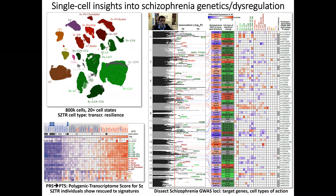We can now use these single-cell data to go back to the genome-wide association loci and figure out what are the target genes that are differentially expressed in disease in these regions, and what are the cell types where these are expressed. Taking schizophrenia and the recent genome-wide association study, we can look at the single-cell dissection of 800,000 cells and start partitioning these cells into more than 20 different subtypes, then ask what are the differentially expressed genes in each of those loci, whether they are positively or negatively associated with schizophrenia, providing a handle for targeting these genes therapeutically.